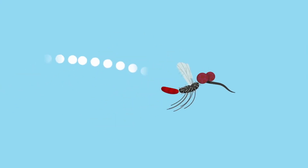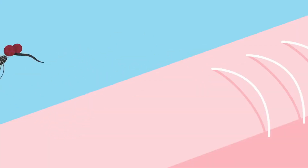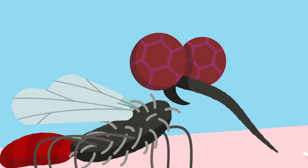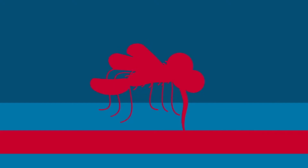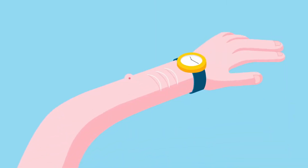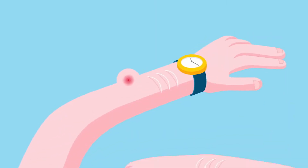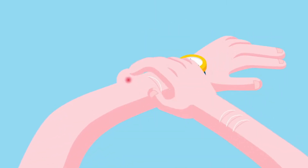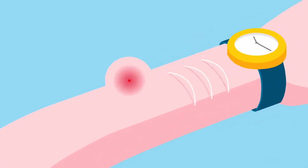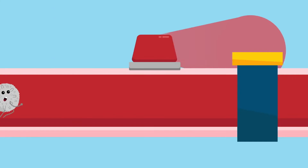A mosquito lands on your arm, injects its chemicals into your skin, and begins to feed. You wouldn't even know it was there if not for the red lump that appears, accompanied by a telltale itch. It's a nuisance, but that bump is an important signal that you are protected by your immune system.